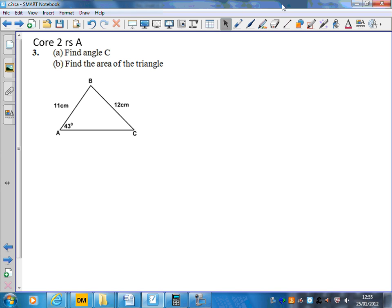Question 3 is asking us to find some information about this triangle. If I look at this triangle, I've got the opposite side to angle C and I've got angle A with its opposite side. This means I can pair the sides up.